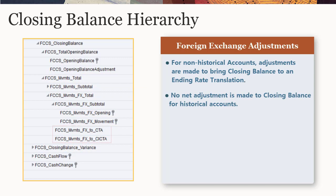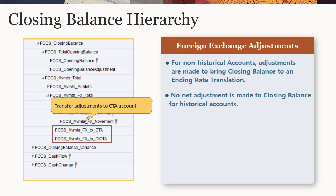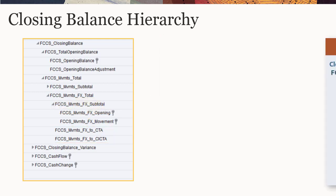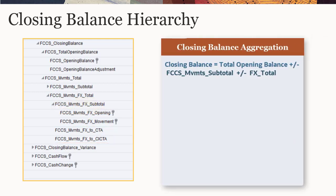For historical accounts, closing balance is presented as the accumulation of the MVMTS translation from period to period. No net foreign exchange adjustments are made to closing balances for historical accounts. Instead, adjustments are calculated and then transferred to a currency translation adjustment account. The closing balance member is aggregated from total opening balance, movement subtotal, and total change due to foreign exchange.